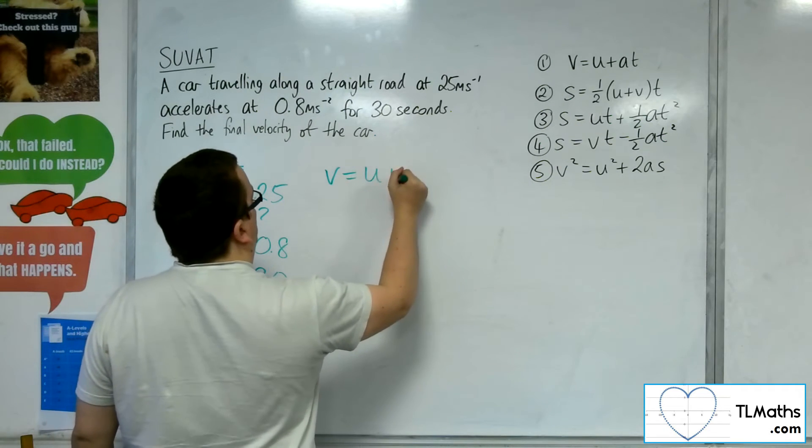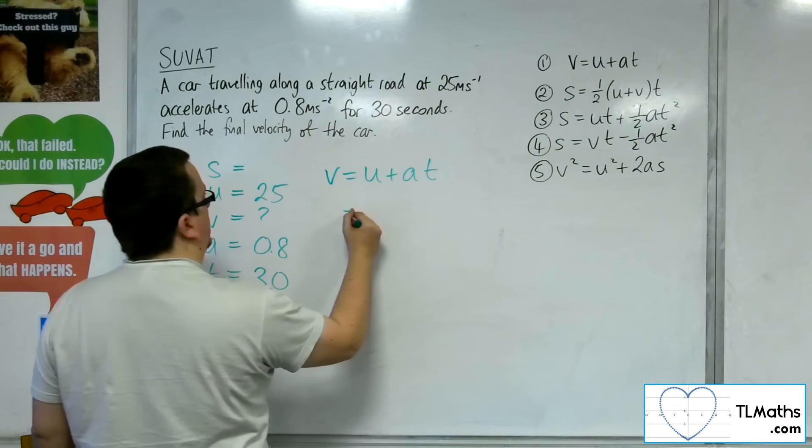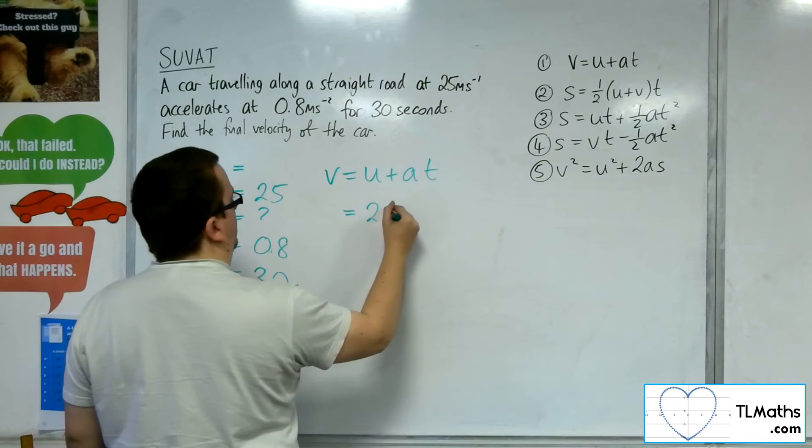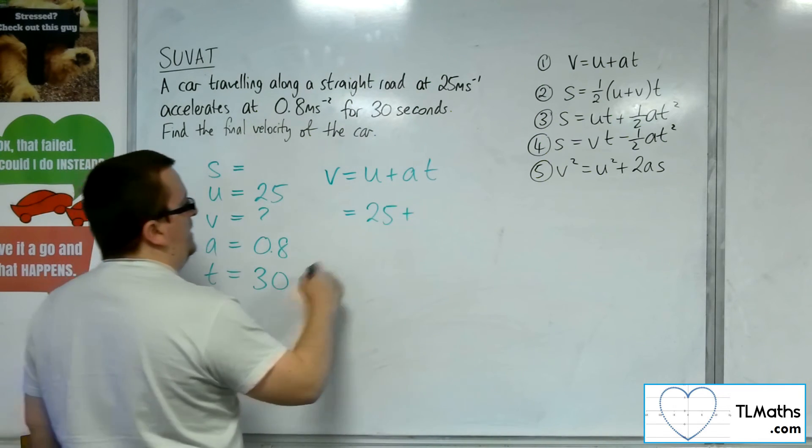So V is equal to U plus AT, which is equal to the 25 plus the 0.8 times 30.